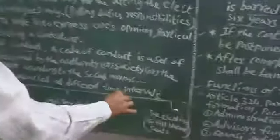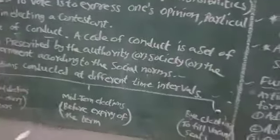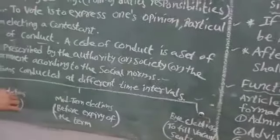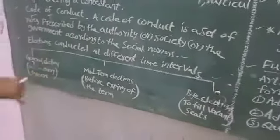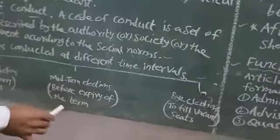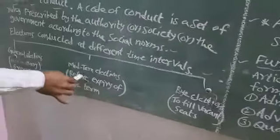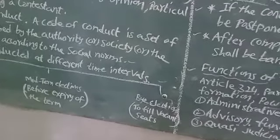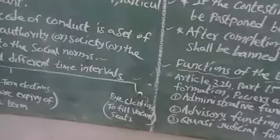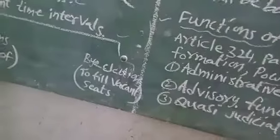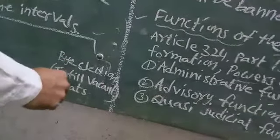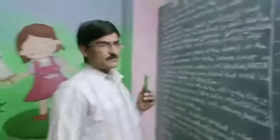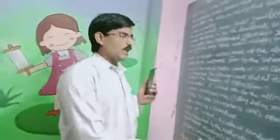Elections in our country are conducted in different types: general elections, mid-term elections, and by-elections. General elections are held once every five years. Mid-term elections occur before the expiry of the five-year term — for example, if the Prime Minister and Council of Ministers resign before five years. By-elections are held to fill a vacancy of a seat when a candidate is expelled or resigns from one area.